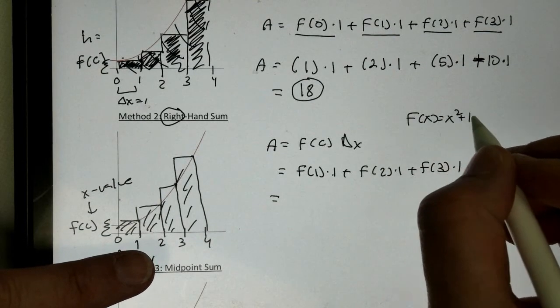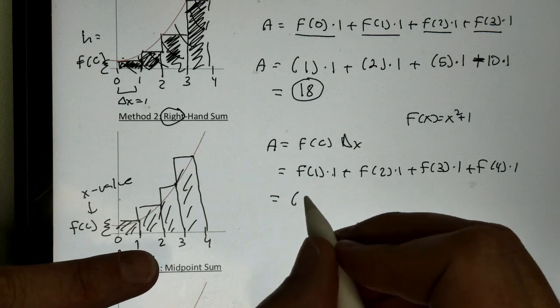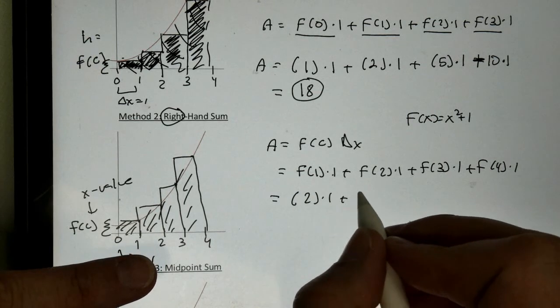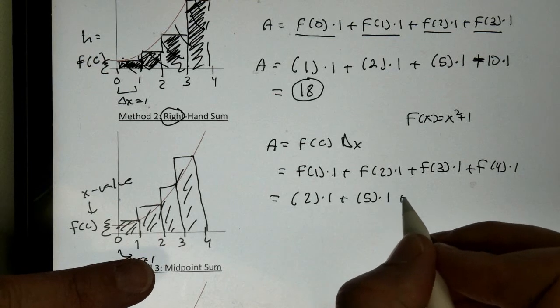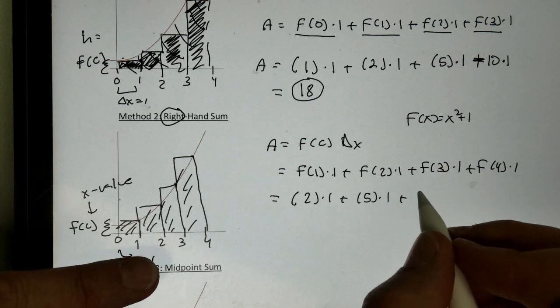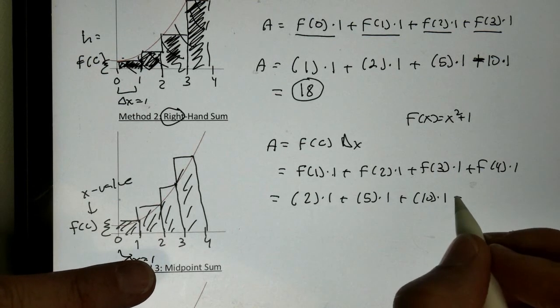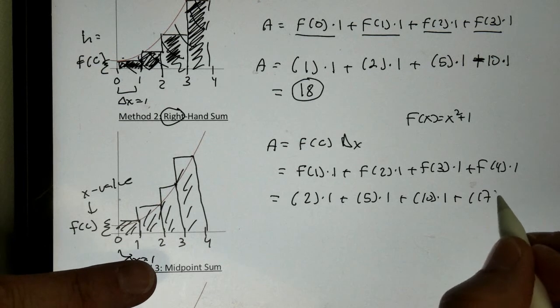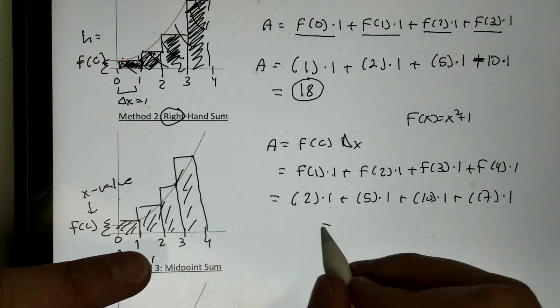And I can just plug these into my function. Remember what f of x is, x squared plus 1. Plug in the 1, we just get 2 times 1. Plug in the 2, we get 5 times 1. Plug in the 3, we get 10 times 1. Plug in the 4, we get 17 times 1.